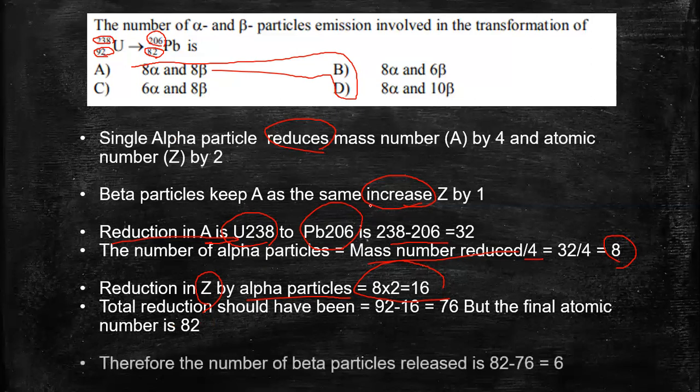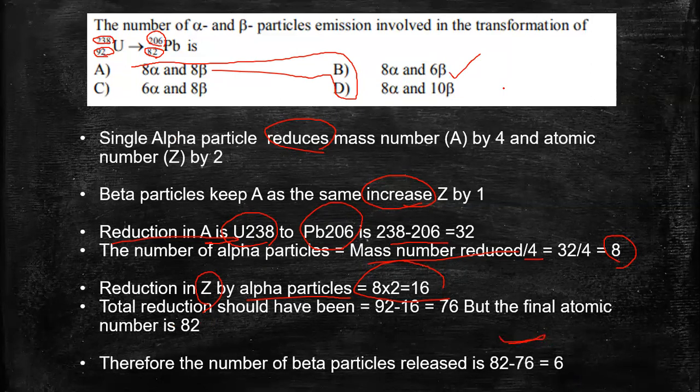But the final atomic number is 82. It means some beta particles have been emitted which increase the atomic number. So for that if we are considering, we can write 82 minus 76 and it gives us 6 beta particles. Now we got the answer as option B, 8 alpha and 6 beta.